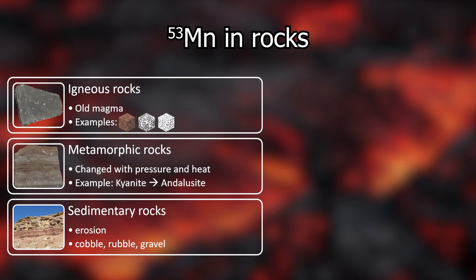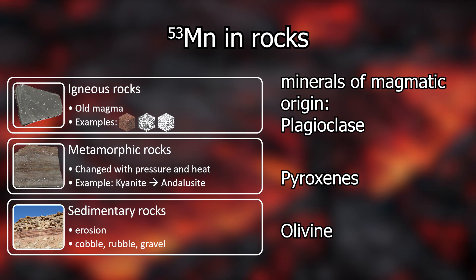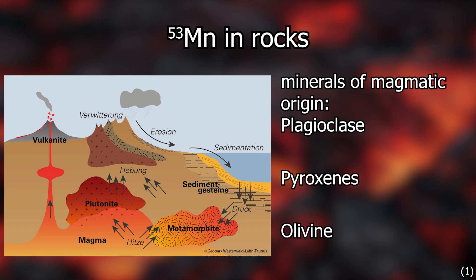And where is iron found? In igneous rocks — for example, plagioclase, pyroxenes, and olivine all contain iron. Igneous rocks are simply the result of solidified molten rock, cold magma if you like. A further distinction is made between plutonic — magma that has had time to slowly cool below the surface — or volcanic, meaning magma that is shot out by eruptions and is then lava. And this material cools quite quickly.